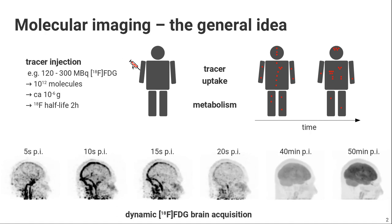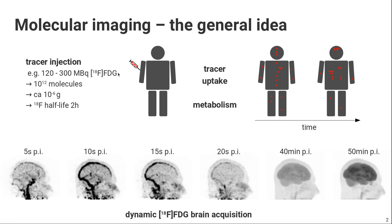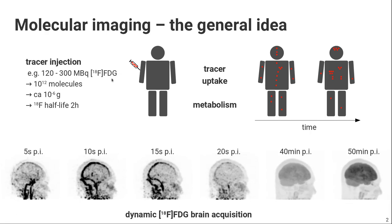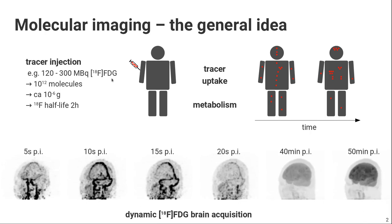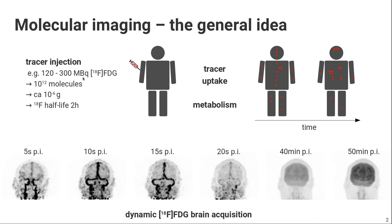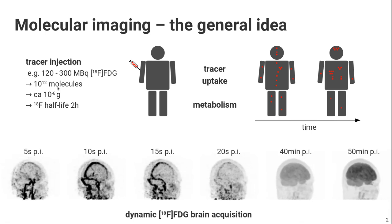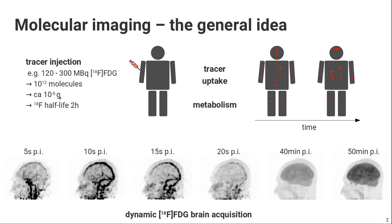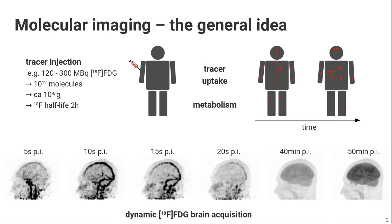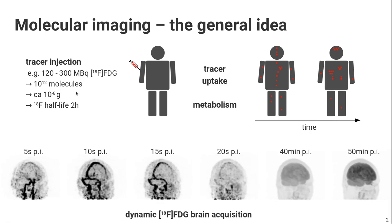In nuclear medicine, we use radioactive isotopes that emit gamma radiation to do that. For example, we're sometimes interested in glucose metabolism because some tumors have higher glucose metabolism, or we want to image the brain's glucose metabolism. We inject around 100 to 300 megabecquerels of radioactive glucose. If you do the math, that's approximately 10^12 molecules, which converts to roughly only a microgram — so the amount injected is actually tiny, which also means less radioactivity in the body.